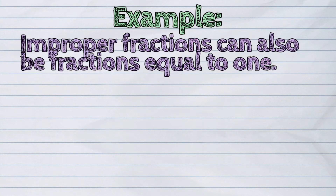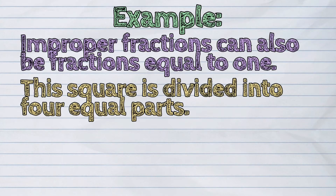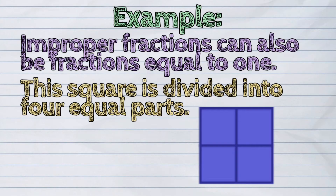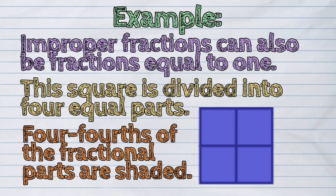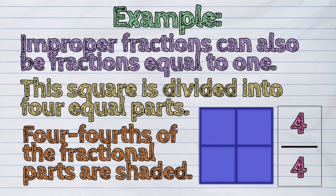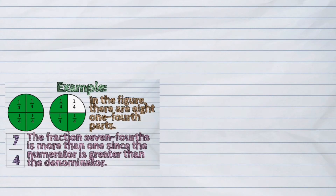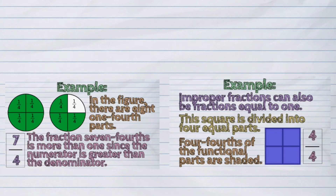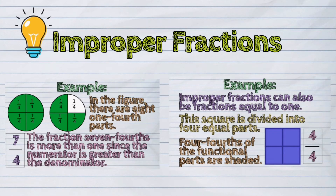Improper fractions can also be fractions equal to one. For example, this square is divided into four equal parts. Four-fourths of the fractional parts are shaded. Seven-fourths and four-fourths are improper fractions.